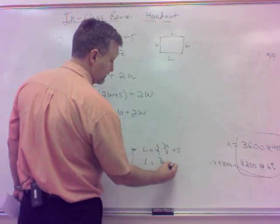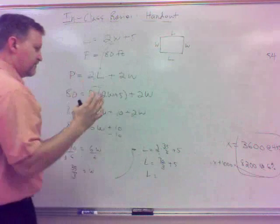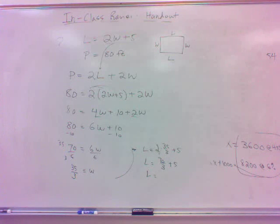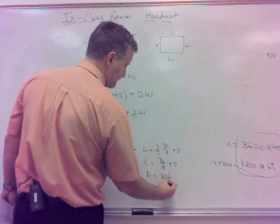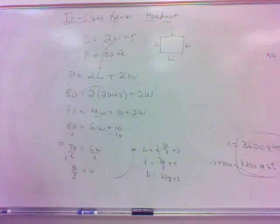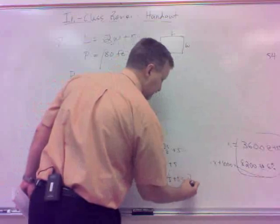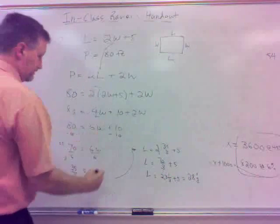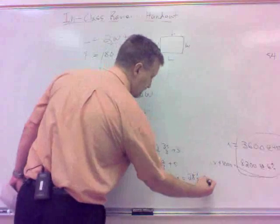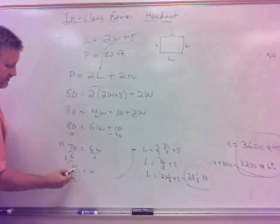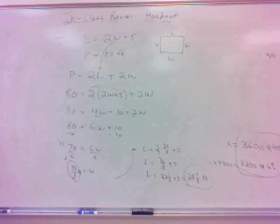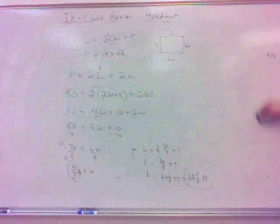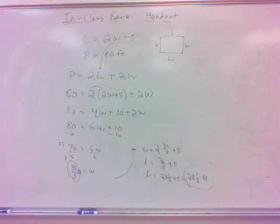Then the length is 2W plus 5, so that would be 2 times 35 thirds, plus 5. So that's 2 over 1, so that would be 70 thirds plus 5. So that's going to be your length. 70 thirds, we can change that. It's 23 and a third plus 5. So that's 28 and a third length. Feet. The length is 28 and a third feet. 35 and a third, which you can change that to a mixed number if you want to.